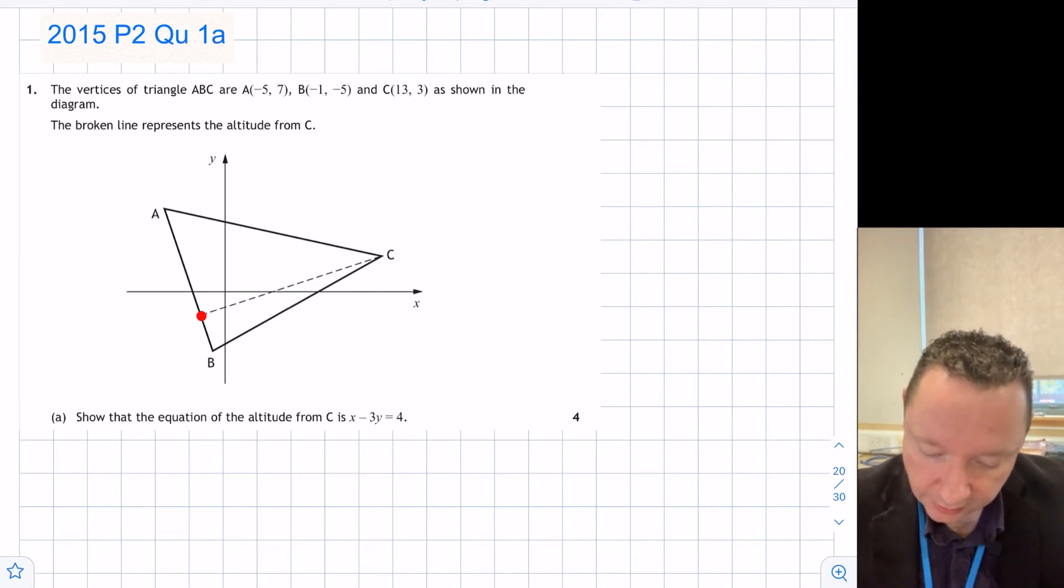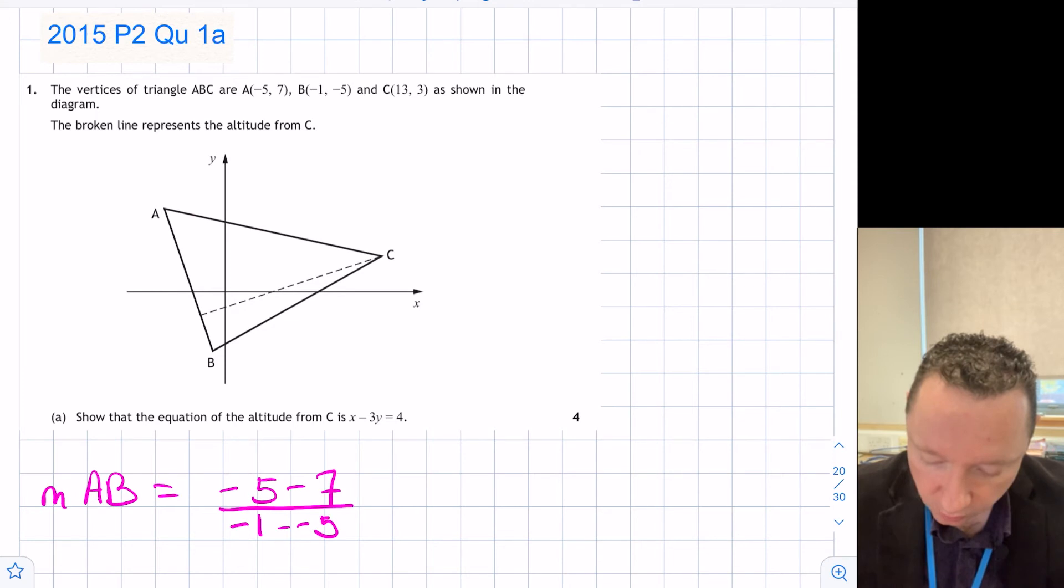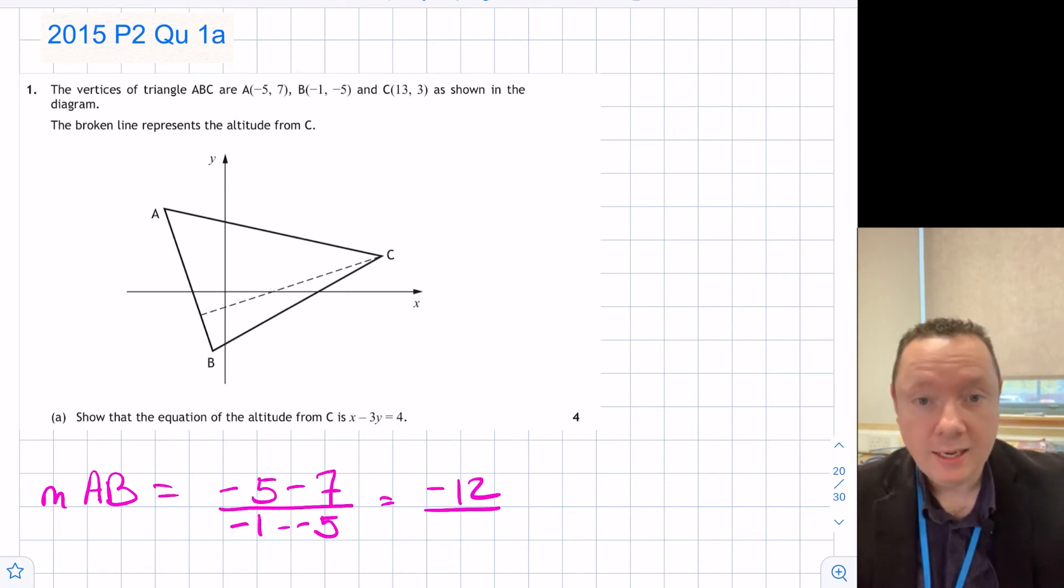So from C, we need the gradient. So we're going to have to find the gradient of A and B and use perpendicular lines, and then we're going to use point C with Y minus B equals MX minus A. So the gradient of AB, where we've got B is -5, minus 7 on the top, and -1, minus -5 on the bottom. -5 take away 7 is -12, -1 plus 5 is 4. -12 divided by 4 is -3, or negative 3.